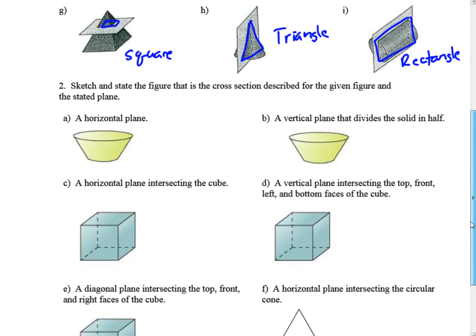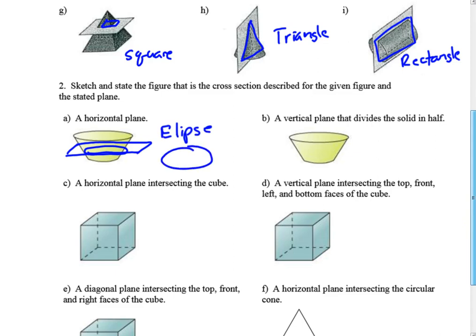Sketch and state the figure that is the cross section for the given figure and stated plane. A horizontal plane slices across this way — for this shape, that gives what looks like an ellipse. It's not quite a circle. If we take that same shape and do a vertical plane coming through here, that's going to form a trapezoid, since you come across and up — the two bases are parallel to each other.